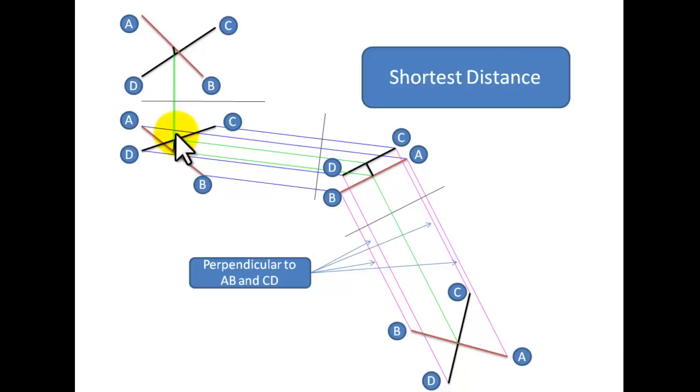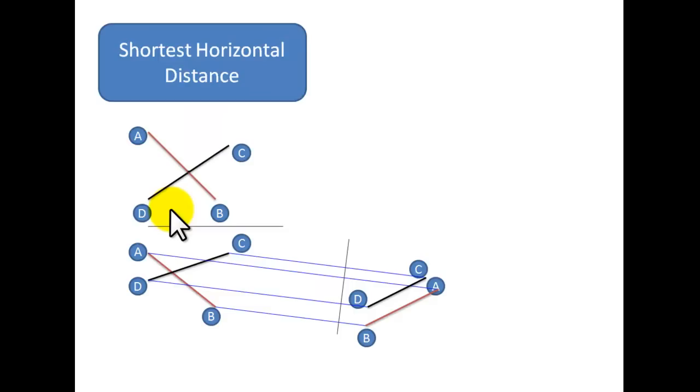To find the shortest horizontal distance, this is a bit different. The initial steps are the exact same - we just find your two lines that are parallel. But horizontal, what does horizontal mean? Horizontal means level across.